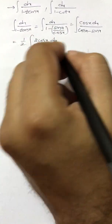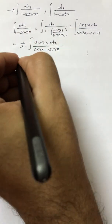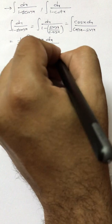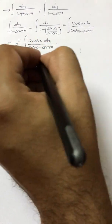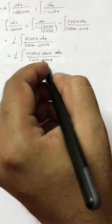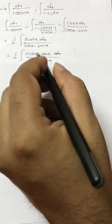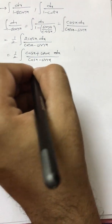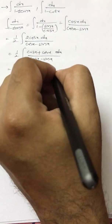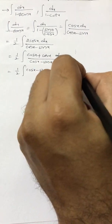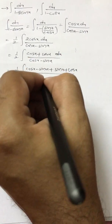We will write 2 cos x as cos x plus cos x. By looking at the denominator, we will add and subtract sine x. So if I add and subtract sine x, we get cos x minus sine x plus sine x plus cos x, all over cos x minus sine x, dx.